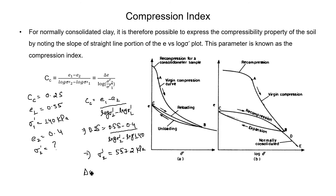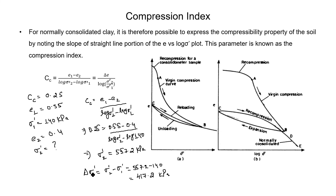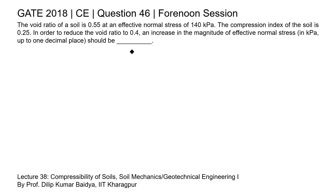Now we can find the increase in effective stress as σ2' minus σ1', which is 557.2 minus 140, giving 417.2 kilopascal. Therefore, the increase in effective normal stress is 417.2 kilopascal, and this is the correct answer.